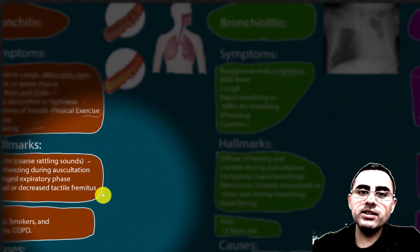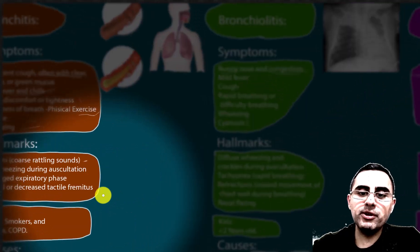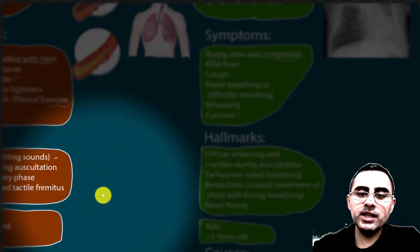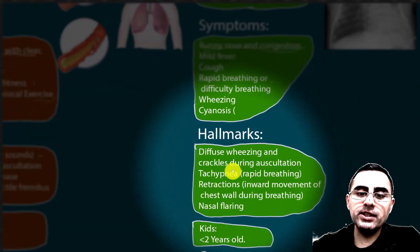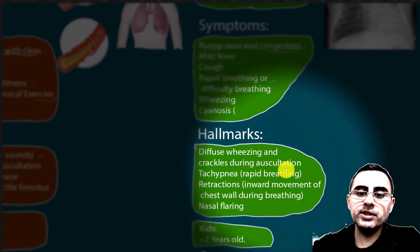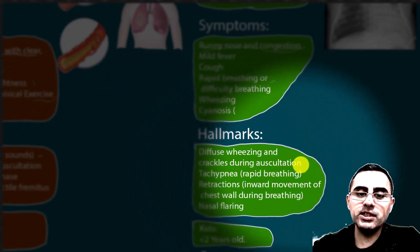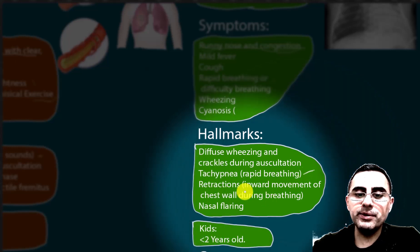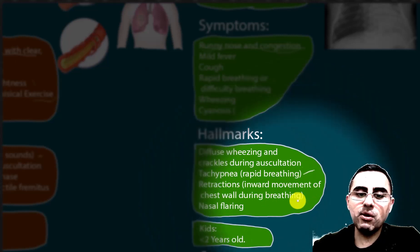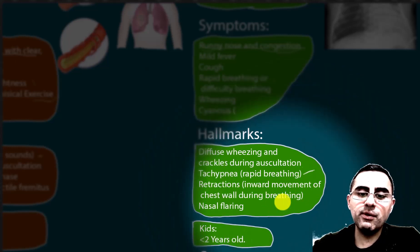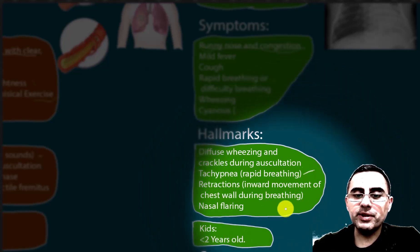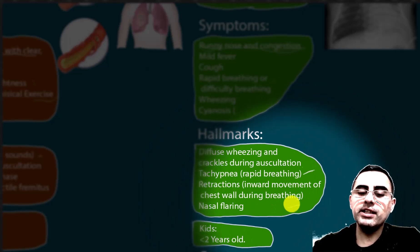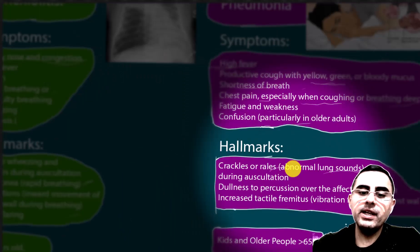In the case of bronchiolitis, diffuse wheezing and crackles during auscultation are common. Tachypnea, or rapid breathing, is also common, as is chest wall retraction — the inward movement of the chest wall during breathing.